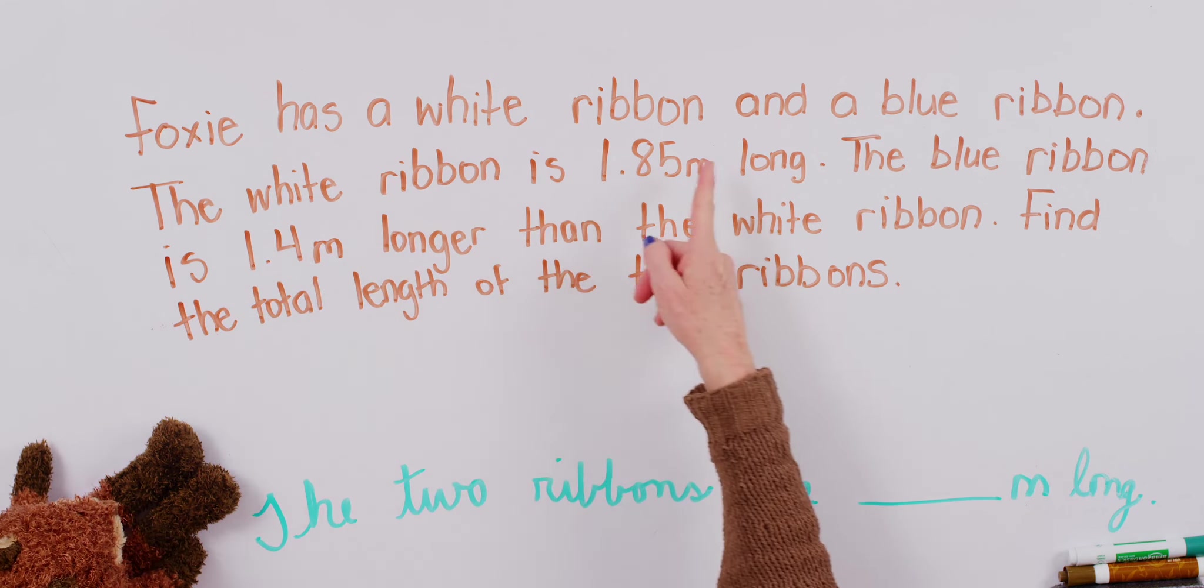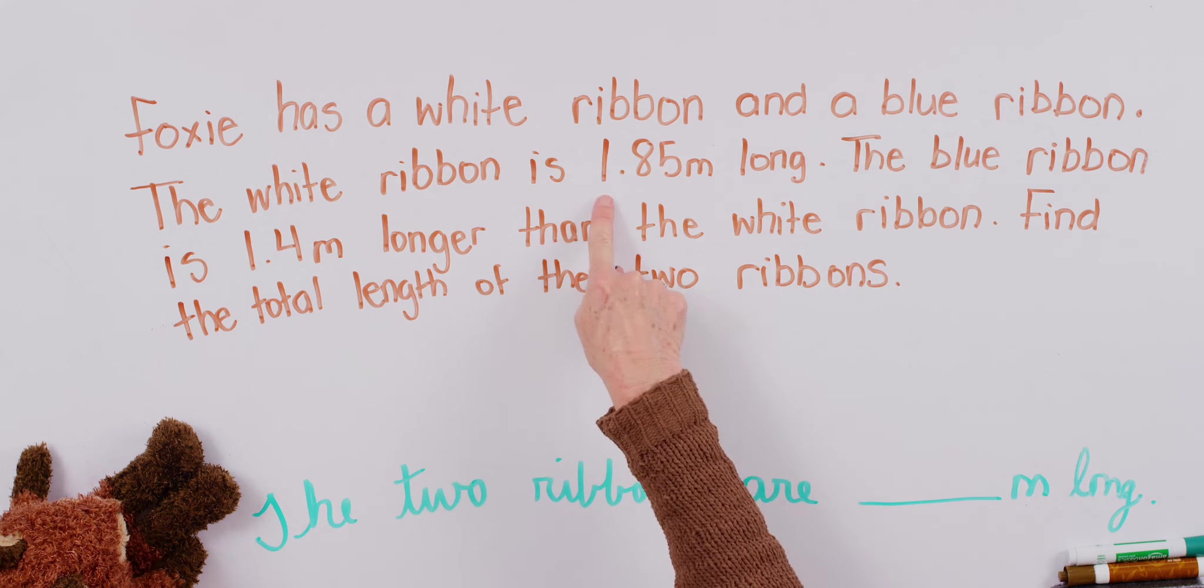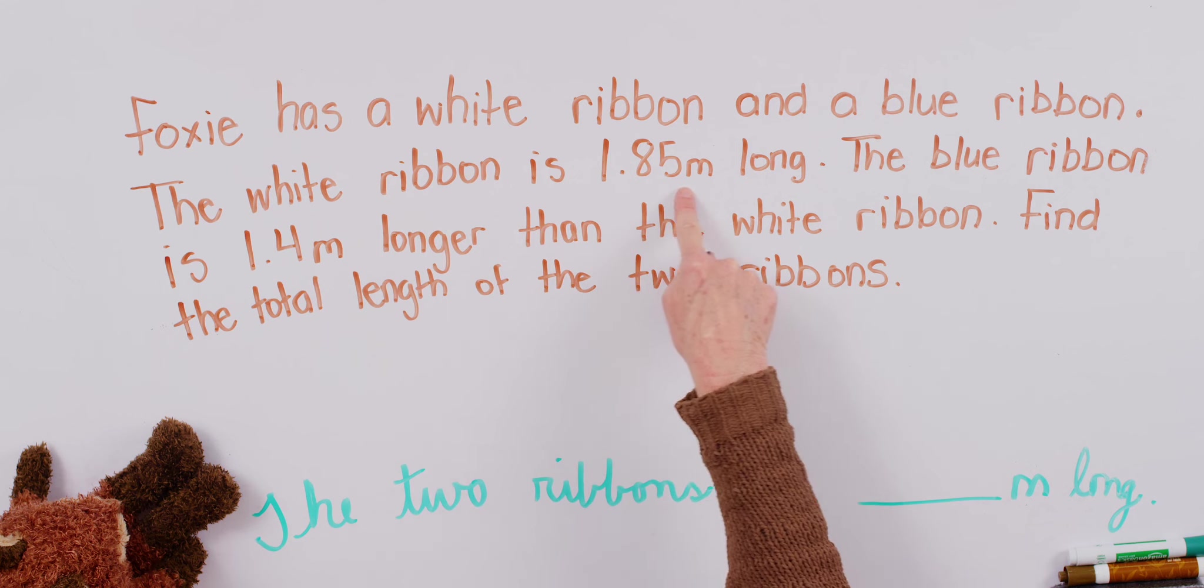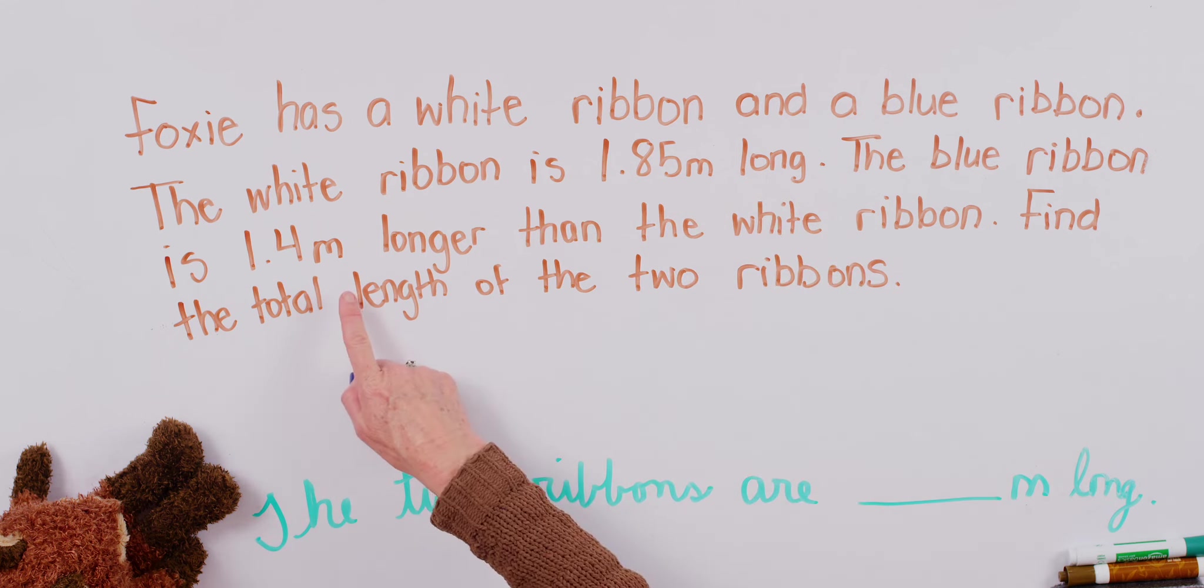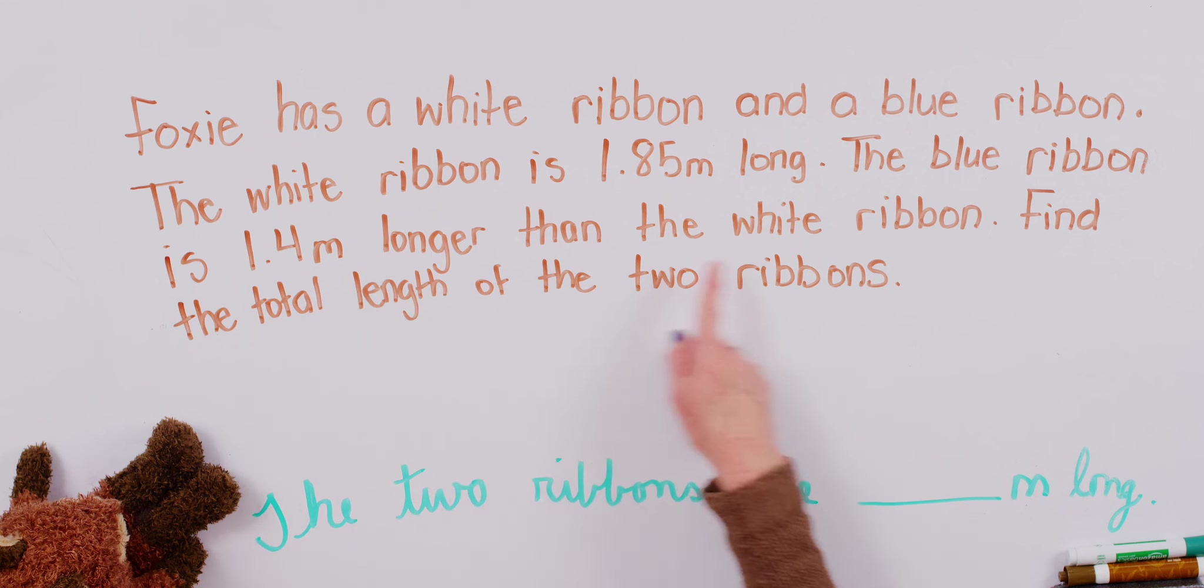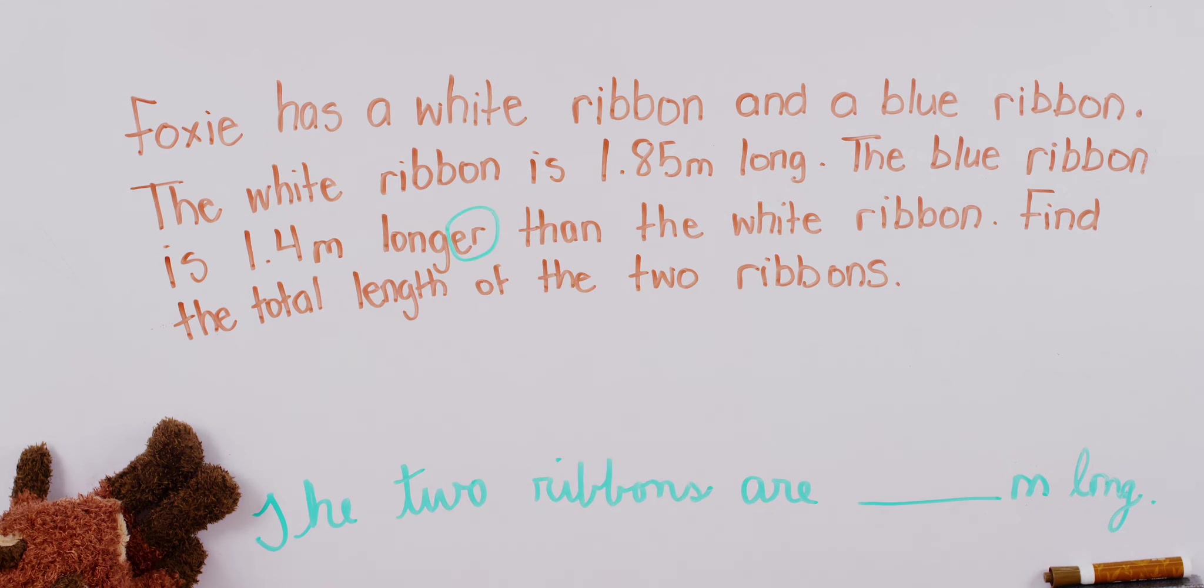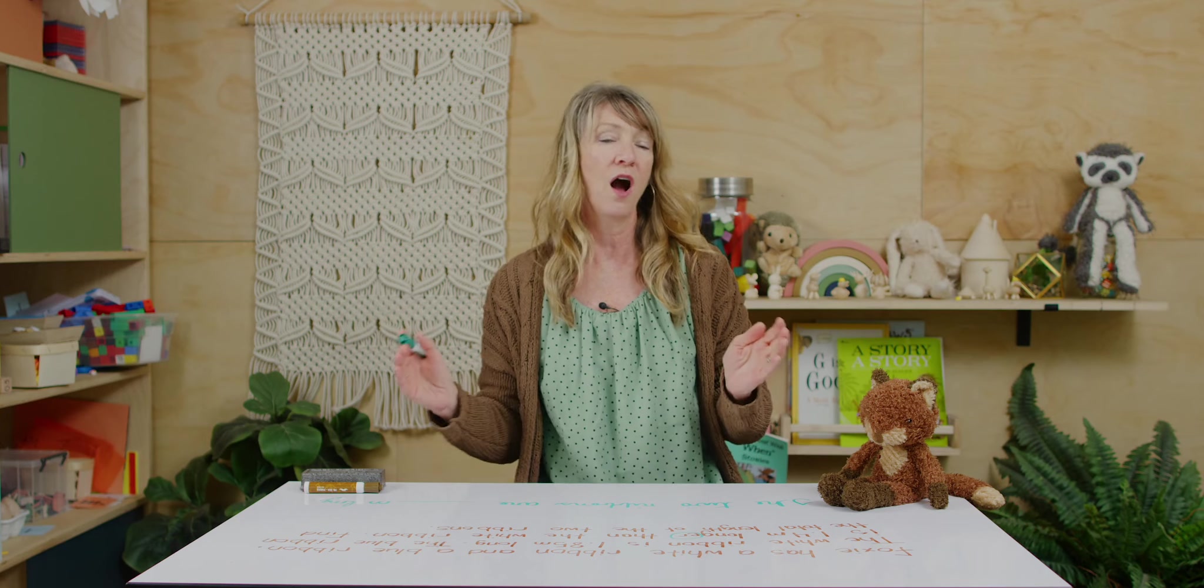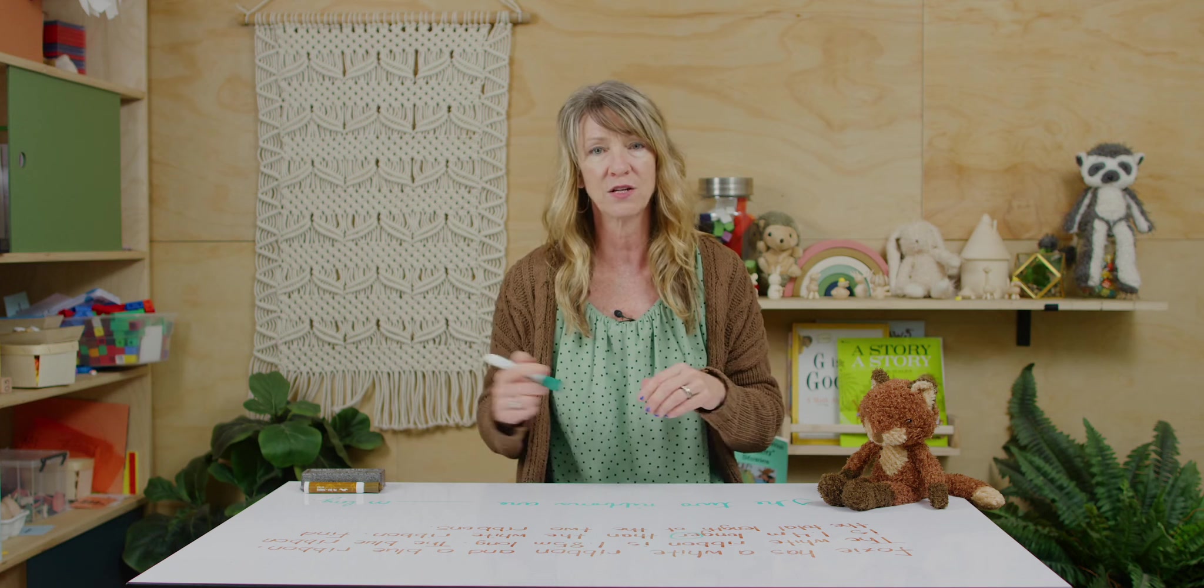Foxy has a white ribbon and a blue ribbon. So two pieces, right? The white ribbon is 1.85 meters long. The blue ribbon is 1.4 meters longer than the white ribbon. Find the total length of the two white ribbons. So let's think about this. If our blue ribbon is longer than the white ribbon, should we do a continuous bar model or a comparison problem?